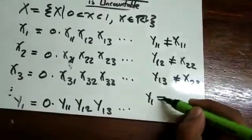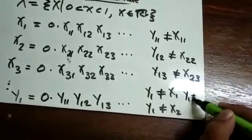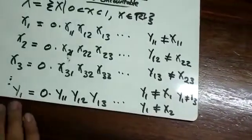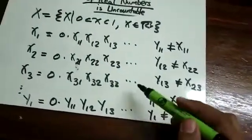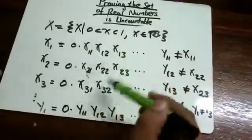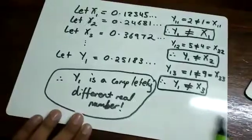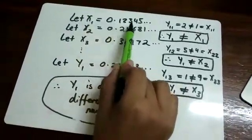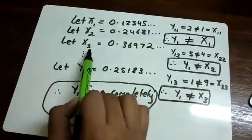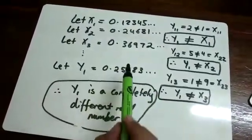And by ensuring that, we can make sure that y1 is not equal to x1, y1 is also not equal to x3. And if we do that for all the x's, which are infinite, and in theory, we can create an entirely different number that has not been accounted for in this organization system. To help you understand this, let's put some integers instead of this x11 and x12, and so on. So here we have x1 equals 0.12345. Here we have x2 equals 0.24681, and here we have x3 equals 0.36972. And this is y1, 0.25183.